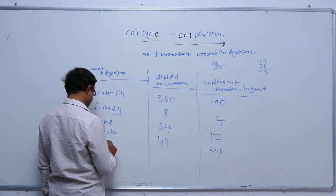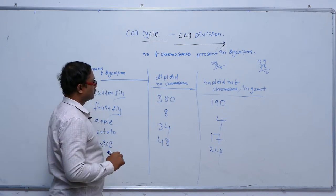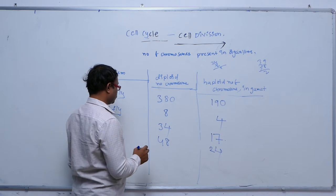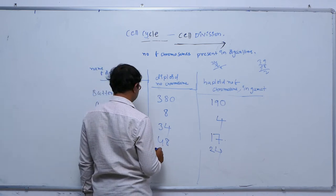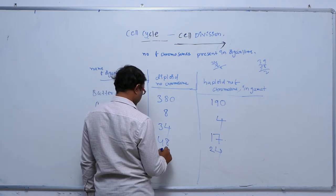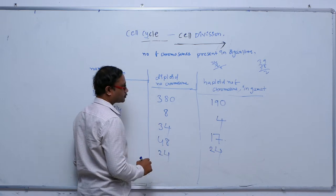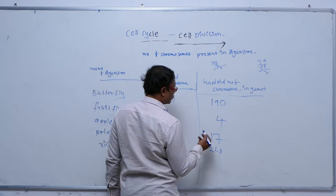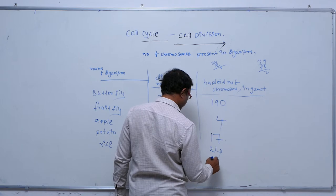In rice, the diploid number of chromosomes is 24, and the haploid number of chromosomes in each gamete is 12.